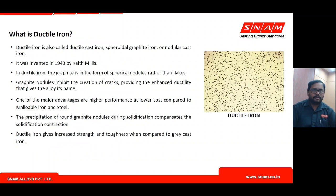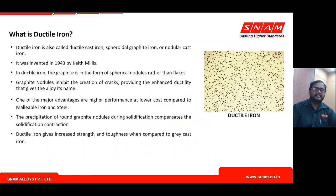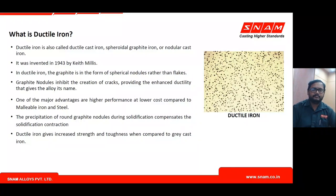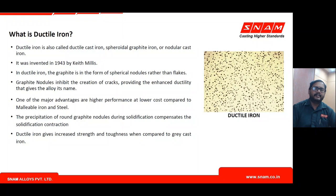Ductile iron is also called ductile cast iron or spheroidal graphite cast iron because it contains graphite in the shape of nodules or spheroids — round, three-dimensionally. It was accidentally invented by Keith Millis in the year 1943. Because this type of cast iron contains graphite in the form of round nodules, it provides good ductility, increased toughness, and fracture resistance.